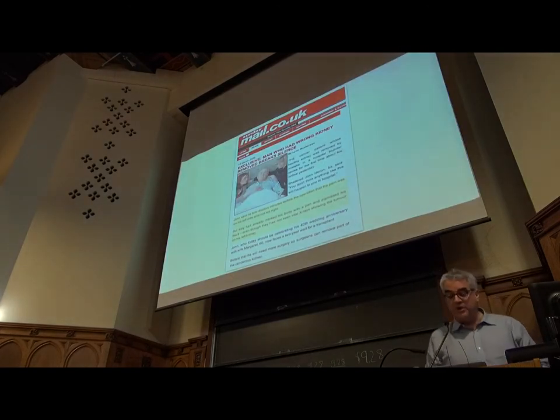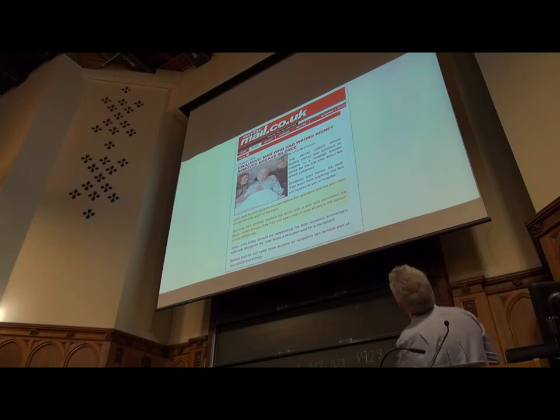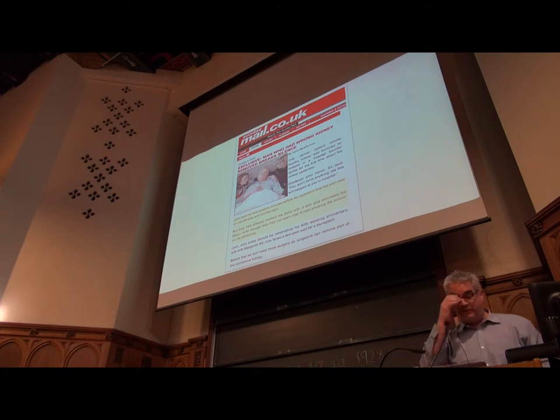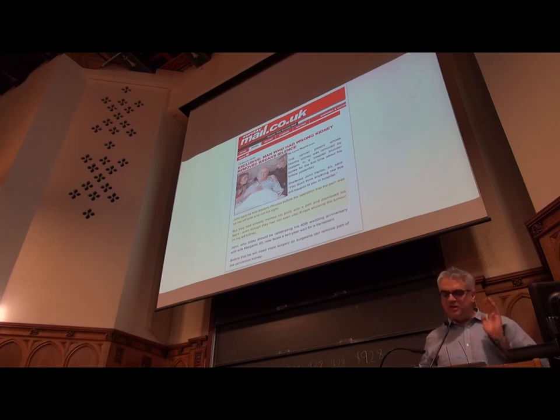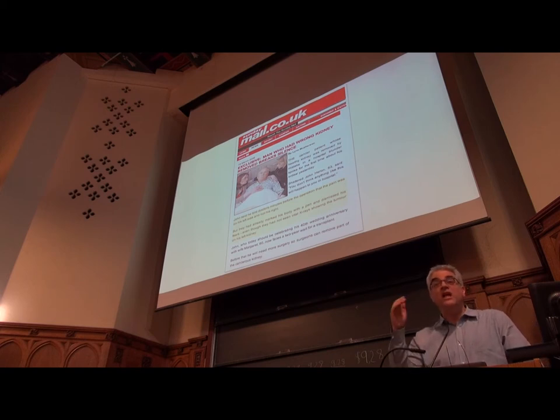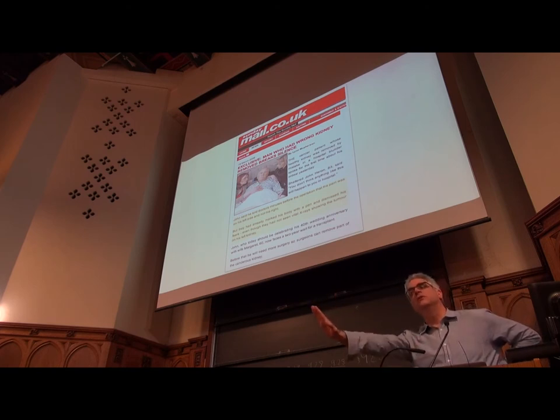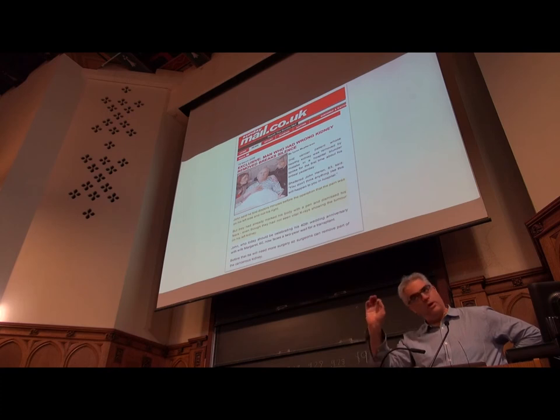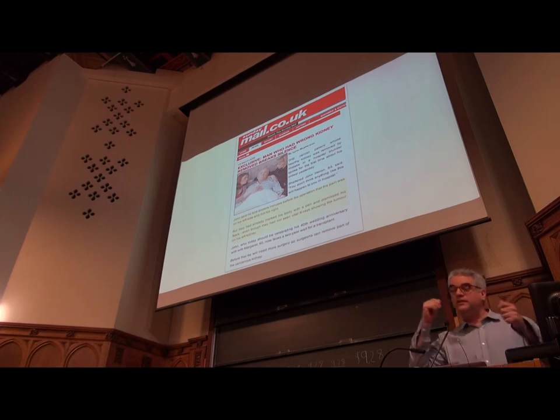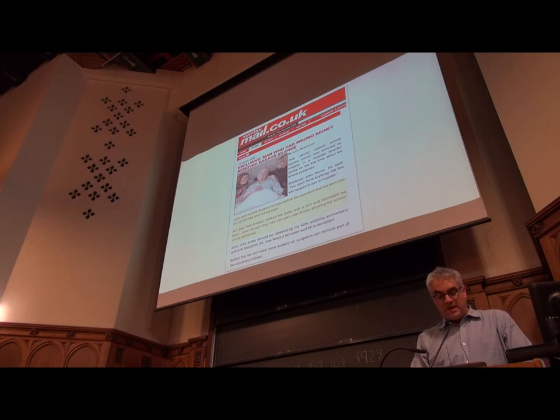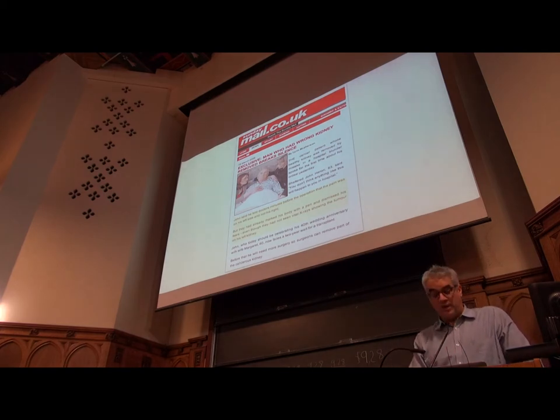Here's an interesting detail about the British case from another newspaper. John said he told the doctors minutes before the operation that the pain was on his left side, not his right. But they had already marked his body with a pen and dismissed his fears, even though they had not seen vital x-rays showing the tumor in his left kidney. The patient actually tries to tell the doctors you're about to operate on the wrong side of my body. They say no, no, no, we know what we're doing. We've already put an X on the spot, so we're going to do our surgery in this location despite what you're telling us now.